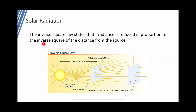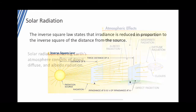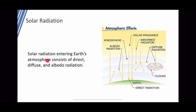Energy is gathered according to the inverse square law, which states that irradiance is reduced in proportion to the inverse square of the distance from the source — as distance increases, a large amount of energy is lost to cover that distance. Solar radiation reaching the earth's atmosphere consists of direct, diffused, and albedo radiation. Direct radiation comes straight from the sun; diffused radiation is absorbed into clouds, ozone, and atmospheric gases.